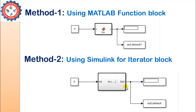Today I will implement both models for a problem that includes the calculation of factorial. We will calculate the factorial of a number provided by the user — here it is shown as 5. So the output should be the factorial of 5, which is 120. You can take a different number also. So we are going to implement these two methods in Simulink.